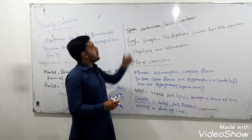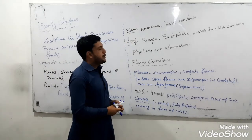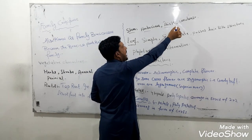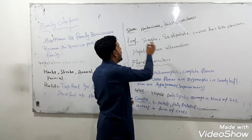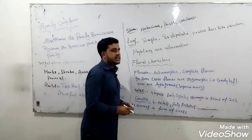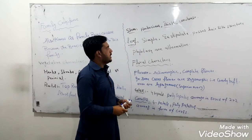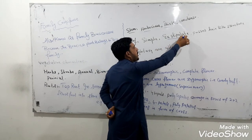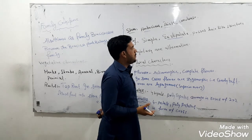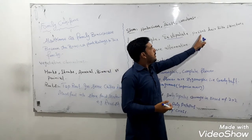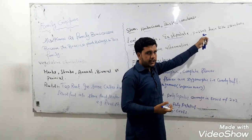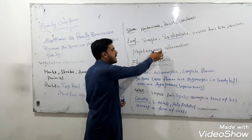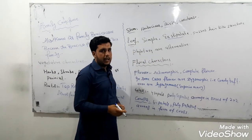Coming to the stem, the stems of this family members are herbaceous — herb-like stems are found. In this family, thick and condensed stems are also found. Leaves are simple; simple leaves are found in this family. They are exstipulate — in other words, stipules are absent. The leaves possess hair-like structures in some plants. The phyllotaxy is alternate — the leaves are arranged in an alternate pattern.